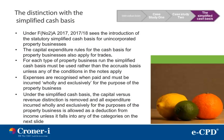Under the Finance Act No. 2 2017, 2017-18 sees the introduction of the statutory simplified cash basis for unincorporated property businesses. The capital expenditure rules for the cash basis for property businesses also apply for trades. For each type of property business run, the simplified cash basis must be used rather than the accruals basis, unless any of the conditions in the notes apply. Expenses are recognised when paid and must be incurred wholly and exclusively for the purpose of the property business. Under the simplified cash basis, the capital vs. revenue distinction is removed and all expenditure incurred wholly and exclusively for the purpose of the property business is allowed as a deduction from income unless it falls into any of the categories on the next slide.